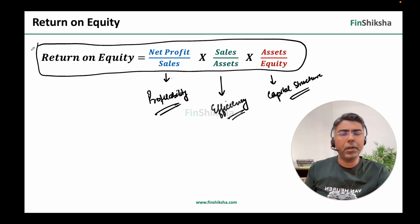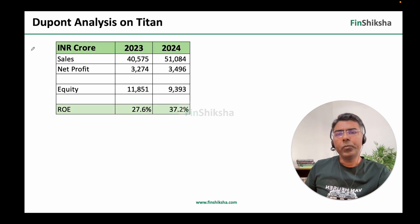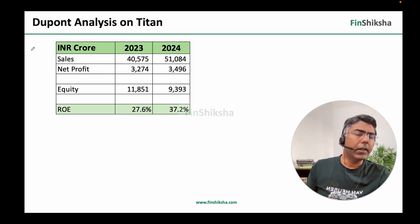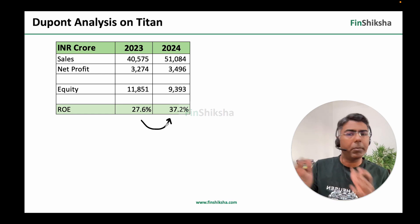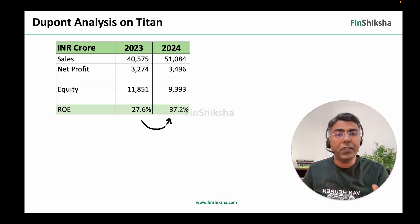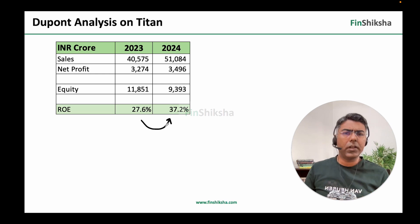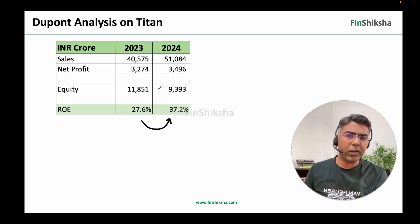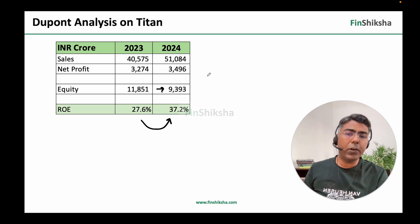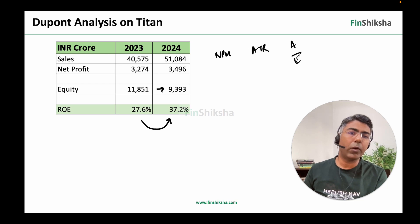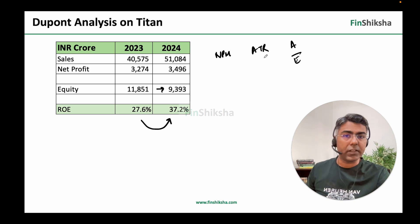Let's take an example using Titan's data for 2023 and 2024. We have sales, net profit, and equity data available. We find that return on equity has actually gone up from 27% to 37% from 2023 to 2024. Prima facie this looks good, but a quick number-crunching tells us that equity seems to have gone down. To do a DuPont analysis, we need net profit margin, asset turnover ratio, and assets upon equity, and then multiply the three to arrive at the equation.